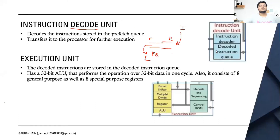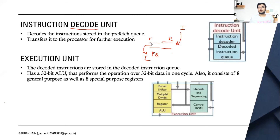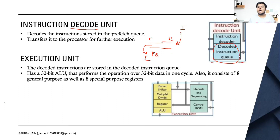The instruction decode unit decodes instructions present in machine language — binary — and converts them into assembly language so they can be executed. Instructions enter the prefetch queue from the rear and exit from the front, which is a property of a queue. Once an instruction is taken from the front to the instruction decode unit, it decodes the instruction and stores it in its own decode instruction queue, as you can see in this diagram. This queue is directly connected to the execution unit.